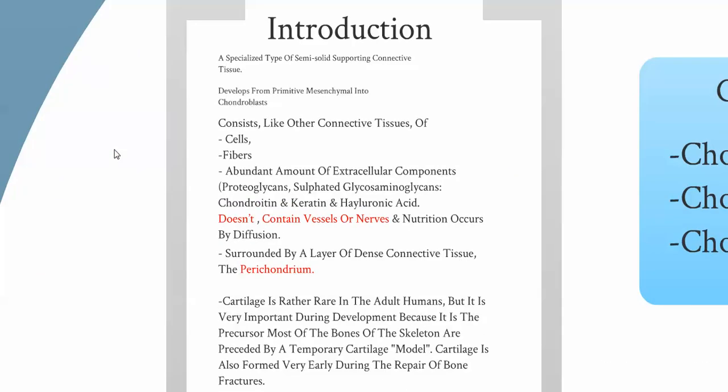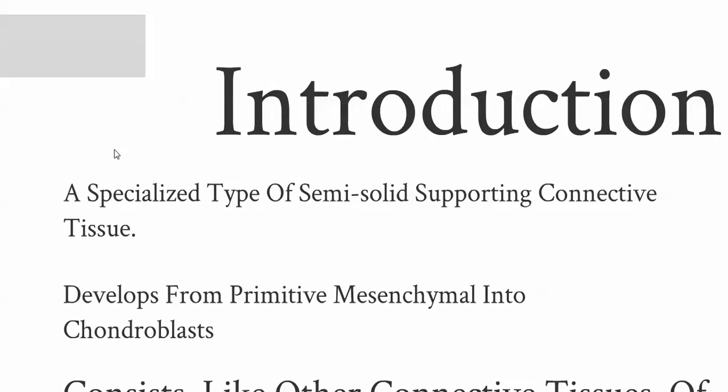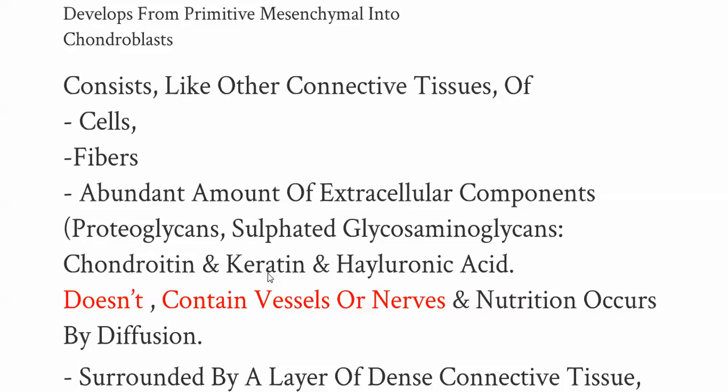Cartilage is a special type of semi-solid supporting connective tissue. It developed from primitive mesenchymal cells into chondroblasts. It consists, like any other connective tissue, of cells, fibers, and an abundant amount of extracellular components — for example, proteoglycans, chondroitin, keratin, and hyaluronic acid.